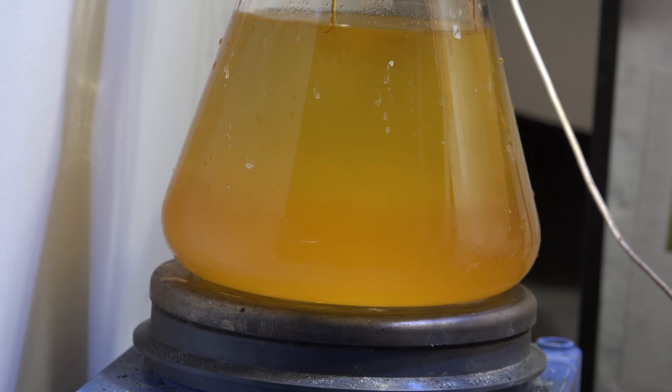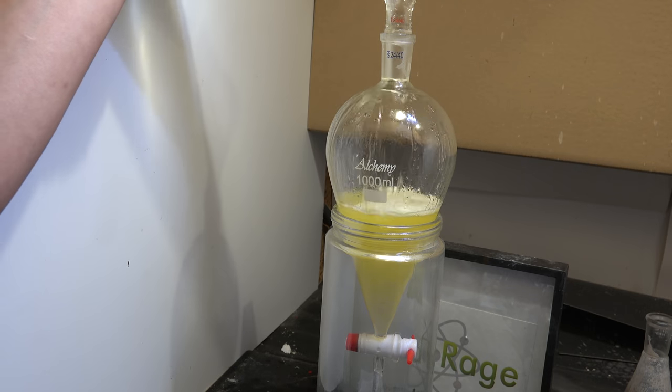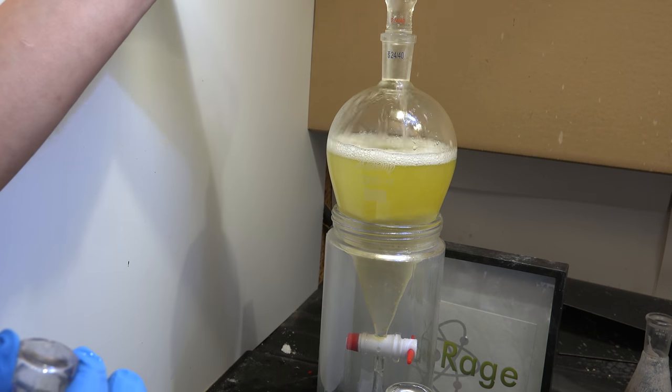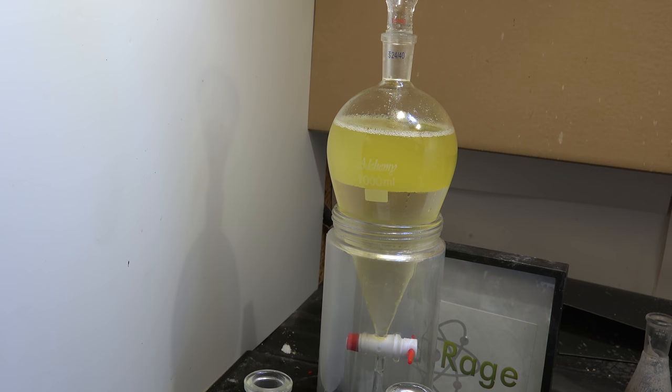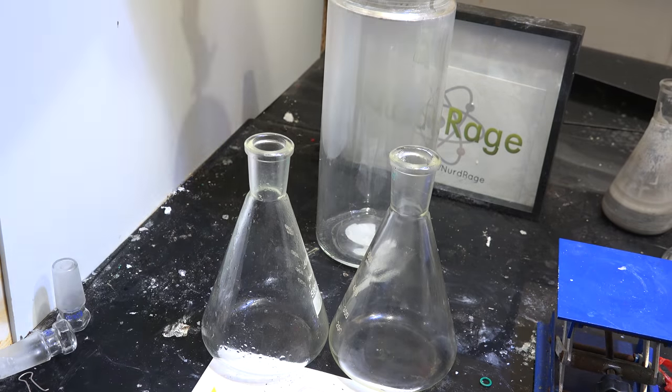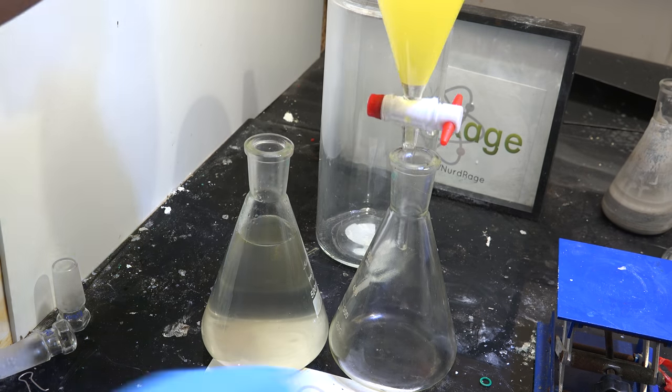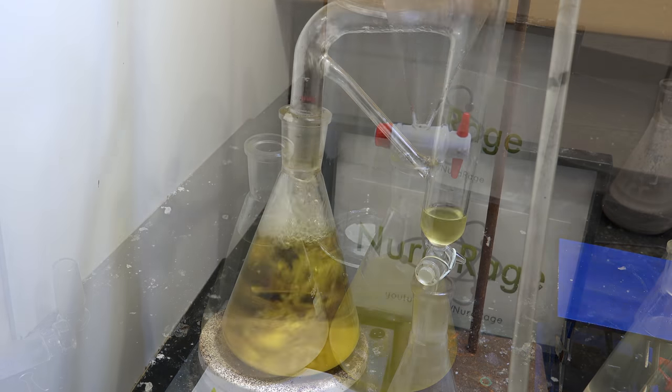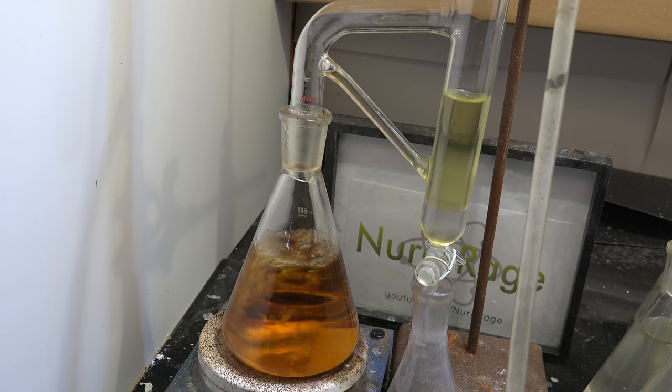Instead impurity destruction with a strong base should be used. First use a separatory funnel and separate out the lower water layer. This is to remove most of the unnecessary volume and make this easier to work with. You might be wondering why I have so much more product in this shot. It's because I had to rerun my reaction from earlier failure of the acid catalyzed hydrolysis. Anyway, at this point you can use a dean stark trap to remove all the remaining water but this is optional.